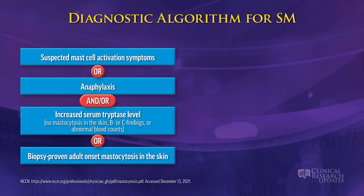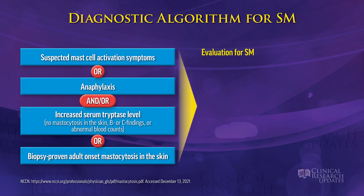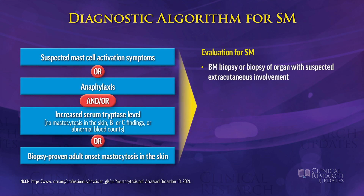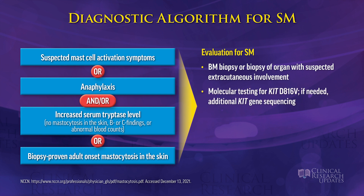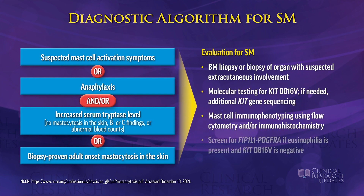Tryptase is probably the best test you can get for these patients to help stratify and categorize them. A baseline serum tryptase above 20, combined with classic mast cell activation-type symptoms, really makes you want to think about the diagnosis of mastocytosis and would prompt you to consider getting a bone marrow biopsy. When you get your bone marrow, you're looking for various things — immunohistochemistry and molecular testing that will help stratify your patients.